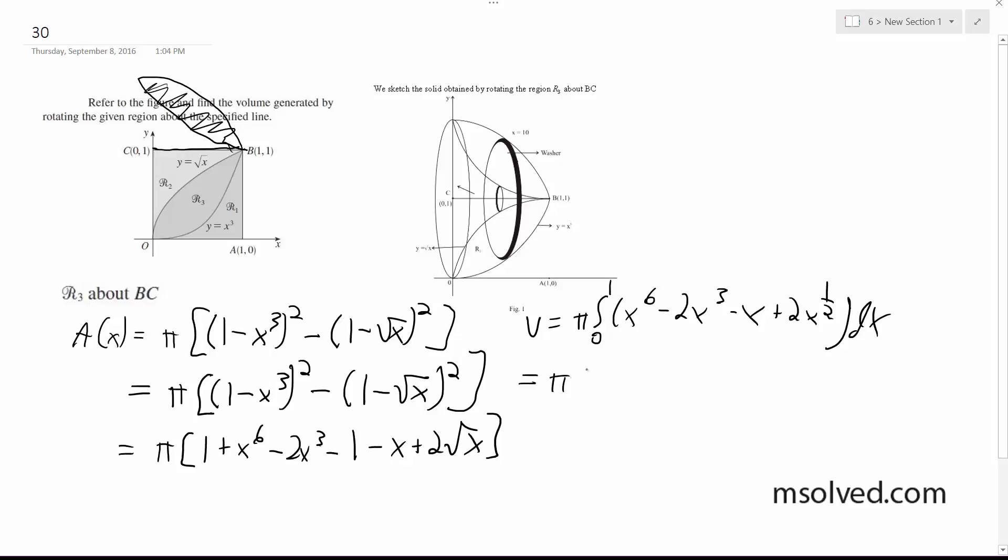Integrated, this becomes pi times 1 seventh x to the seventh minus 1 half x to the fourth minus 1 half x to the second plus 4 thirds x to the 3 halves, evaluated from 0 to 1.